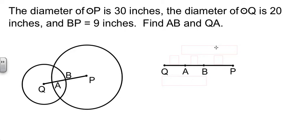Now they told me that the diameter of circle P is 30. That means the radius of it from P to A is 15. They told me the diameter of circle Q is 20, so that means the radius is 10. And they told me that BP is 9. Now this problem is just like one we did back in chapter 1. If AP is 15 and BP is 9, how much is left for AB?